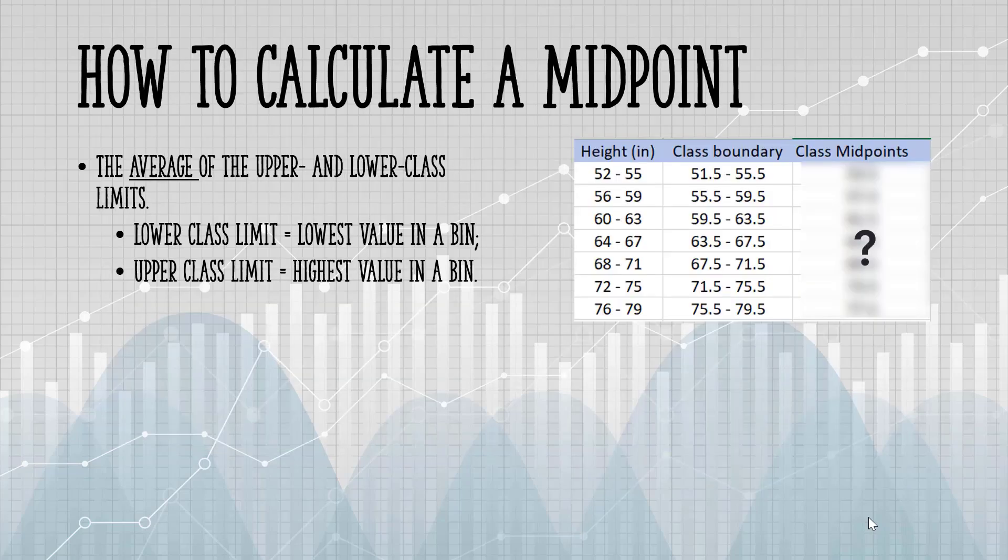So how do we calculate midpoints? The midpoint is the average of the upper and lower class limits. The lower class limit is the lowest value in a bin or category. The upper class limit is the highest value in the bin or category.